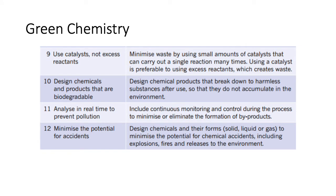Number nine: use catalysts, not excess reactants. Ideally use catalysts to increase the rate of reaction instead of having a high concentration of reactants, which increases your rate of reaction without having so many wasted particles. Number ten: design chemical products that are biodegradable, so once you're done with them they can be broken down without harming the planet.